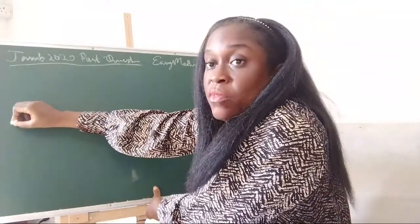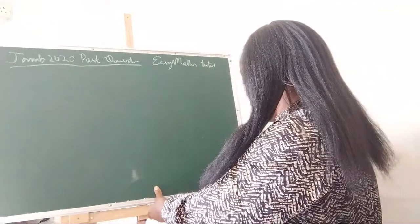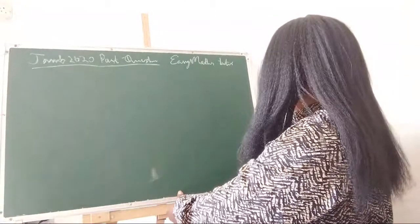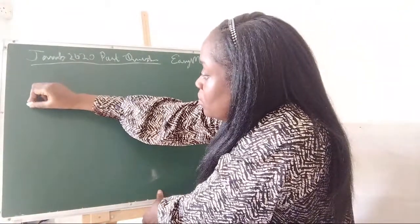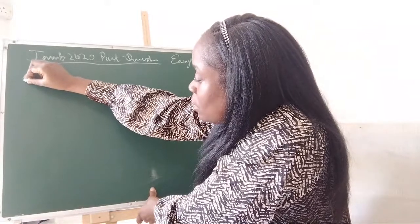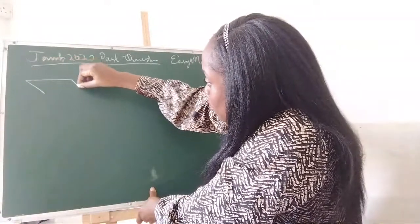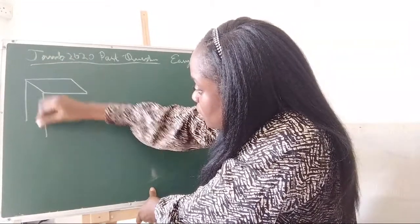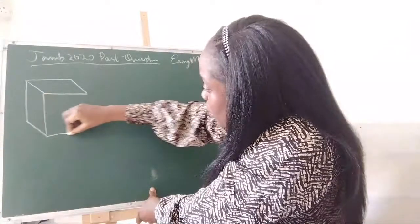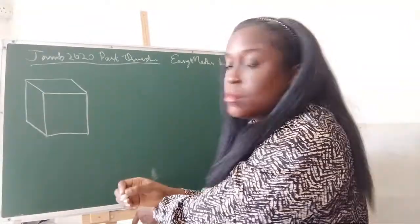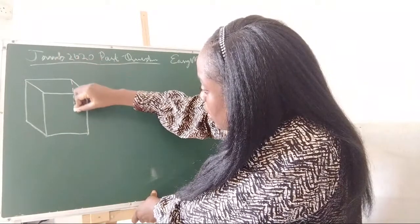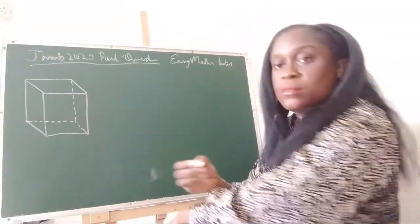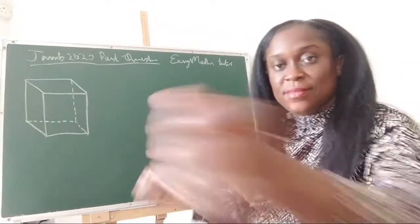We're going to draw a diagram of this room. We'll draw a cuboid — like a rectangular box representing the bedroom, parlor, or kitchen.